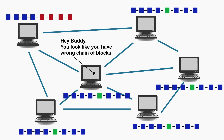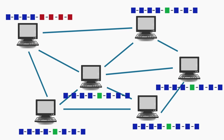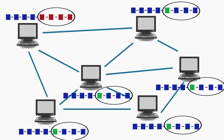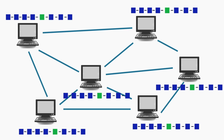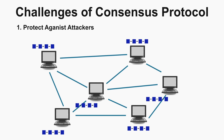To tamper a block in the middle, the attacker has to tamper the whole chain following that block, as well as in all the nodes in the network — at least 500 nodes. So that is not possible. The problem we are talking about here is what happens if an attacker tries to put a block at the end of the chain — that is, tries to add a new block that is malicious.